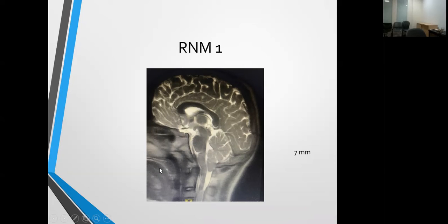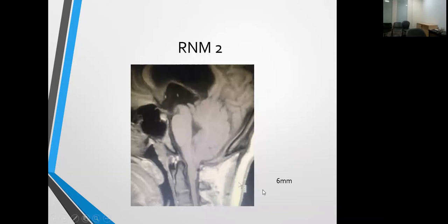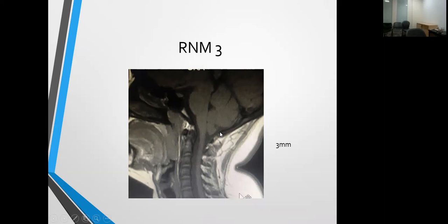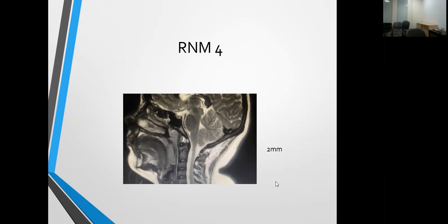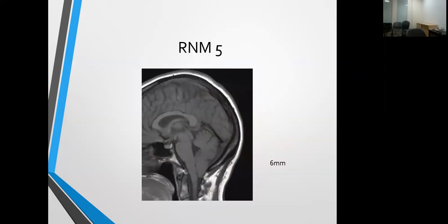En la resonancia magnética del caso 1, el descenso fue de 7 milímetros. El caso número 2 fue de 6 milímetros; vean cómo se está comprimiendo contra la unión cráneo-cervical anterior, sobre el diente. El caso número 3 tuvo un descenso de 3 milímetros —todos estos fueron operados. Este paciente tiene otras alteraciones del tejido conectivo, también del diente y la odontoides. El caso número 4 tuvo un descenso mínimo de 2 milímetros y fue uno de los más sintomáticos. Y otro paciente mostró un descenso muy notorio; vean hasta dónde descienden las amígdalas y cómo se alteran las folias.